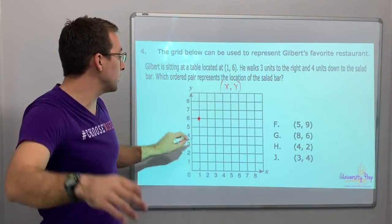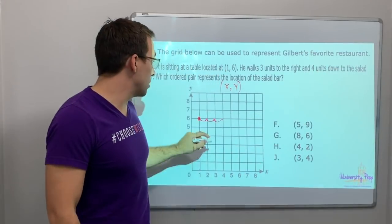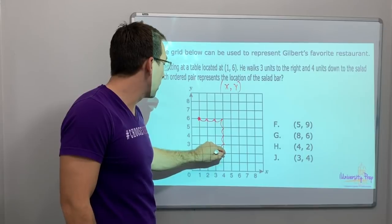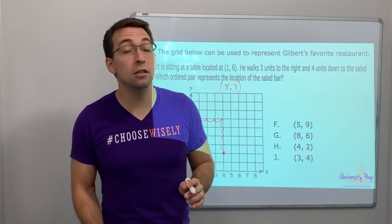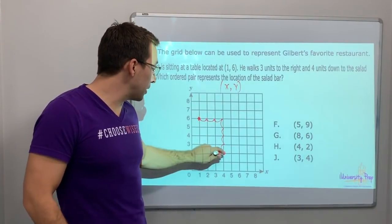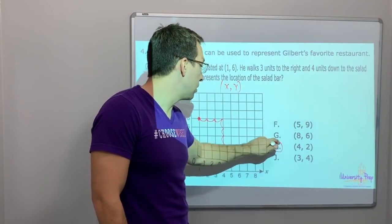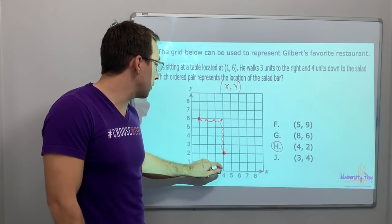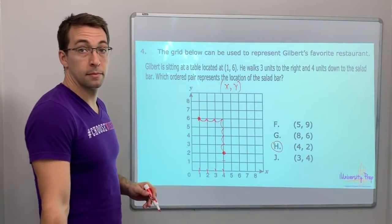He walks three units to the right. One, two, three, and four units down. One, two, three, four. To the bar, to the salad bar. Which ordered pair represents the location of the salad bar. What point is that? So we're at four, two. Look, four, two. One, two, three, four. One, two. Okay. Because that's it.